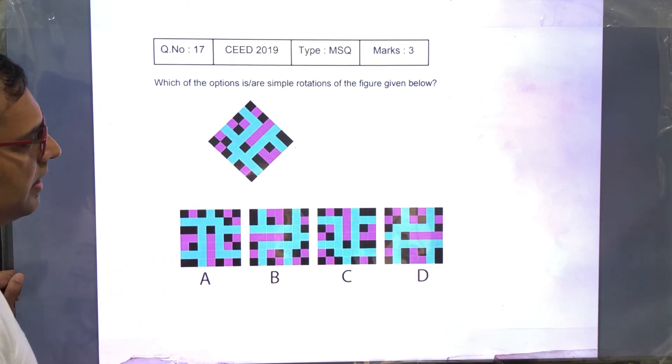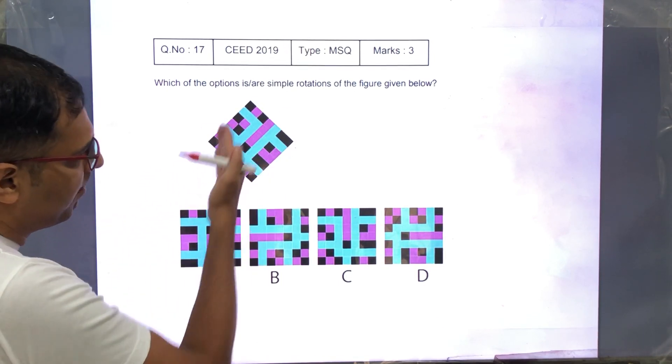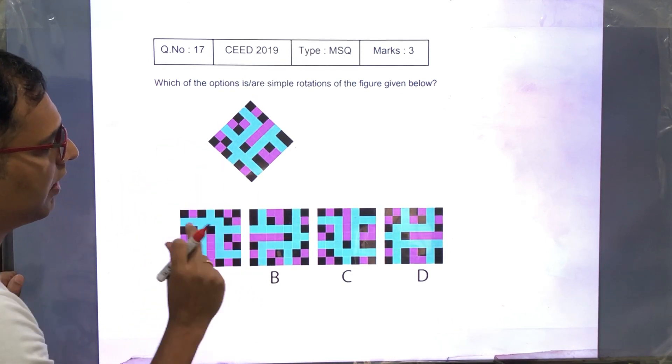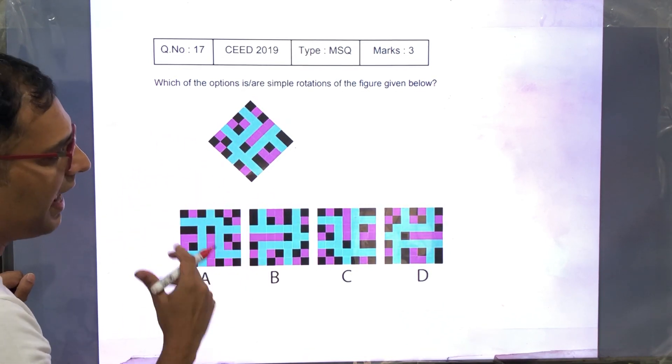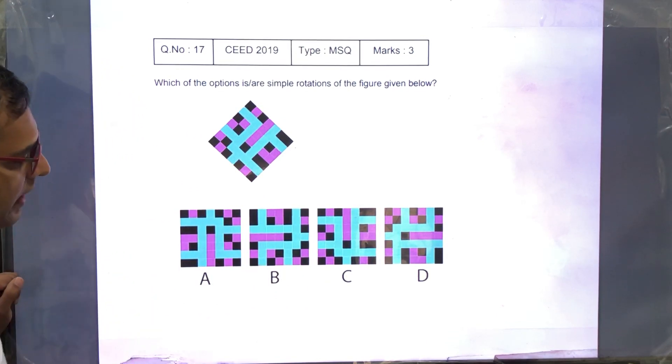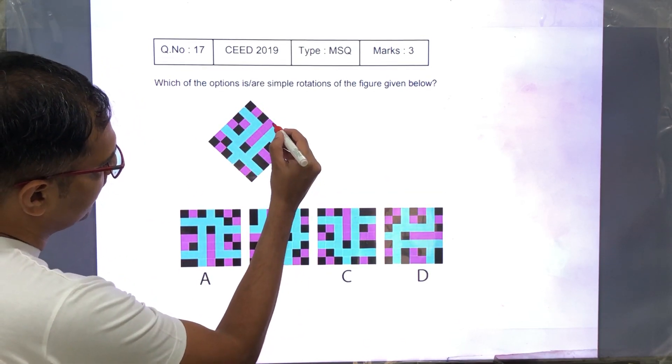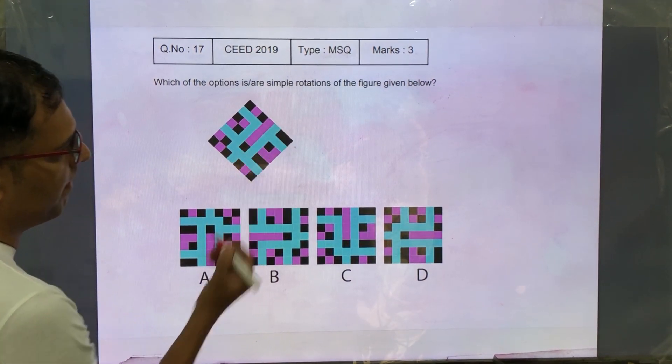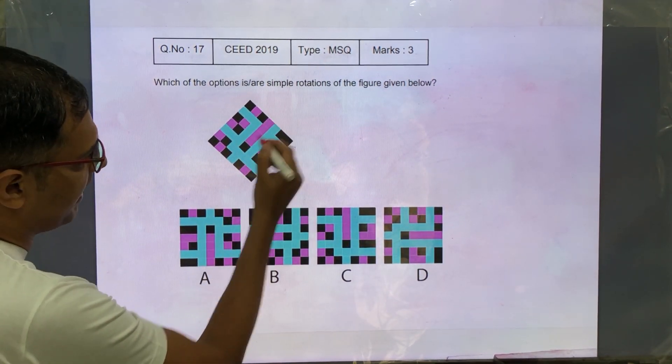What should we do in this case? In a complex figure like this, we have to start with one piece of the figure and start comparing and eliminating. Alright, so in this case, let us take this long column in which there are 4 pink cubes and 1 brown cube and see if we find that.